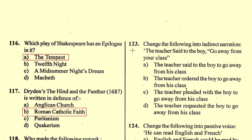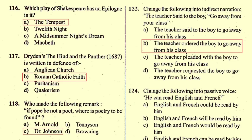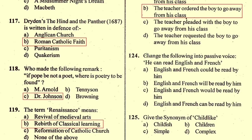Question number 123: Change the following into indirect narration — 'The teacher said to the boy, Go away from your class.' The correct indirect narration is given in option B: 'The teacher ordered the boy to go away from his class.' Question number 124: Change the following into passive voice — 'He can read English and French.' The right passive form is option D: 'English and French can be read by him.'